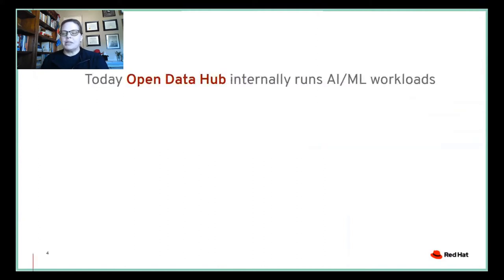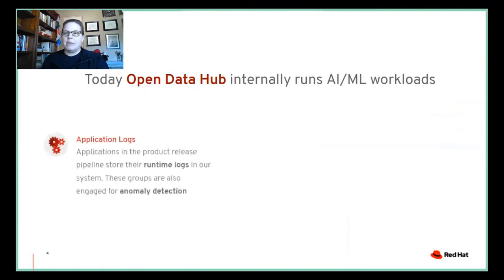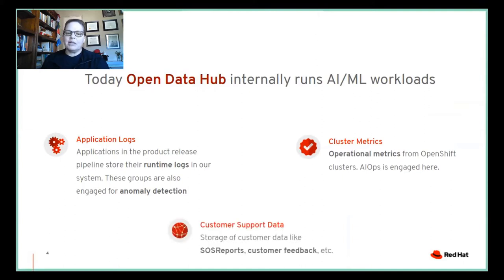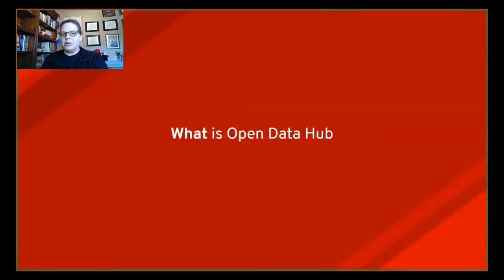Today, Open Data Hub internally runs AI ML workloads such as application logs. In our internal Open Data Hub clusters, we run anomaly detection on multiple Red Hat application logs. We gather and analyze cluster logs from OpenShift clusters, and we have an AI Ops team dedicated to finding or predicting any issues there. Finally, we have customer support data — we store and analyze support reports, customer feedback, and many other types of customer data.